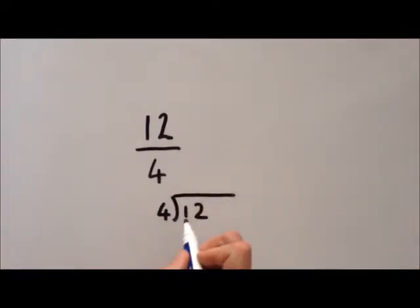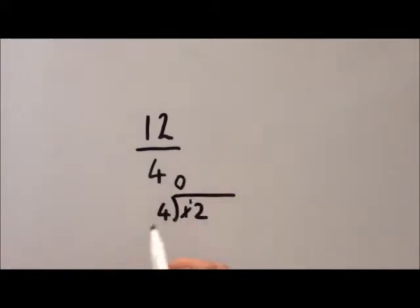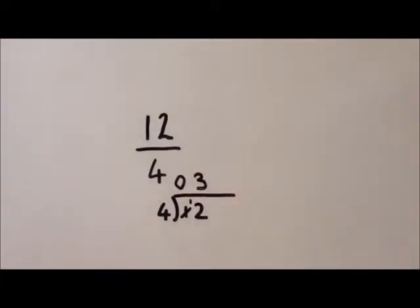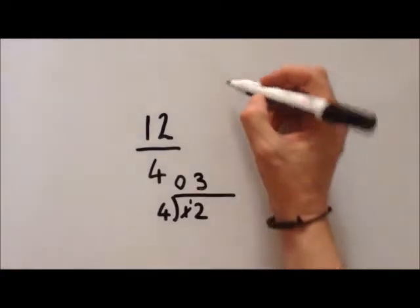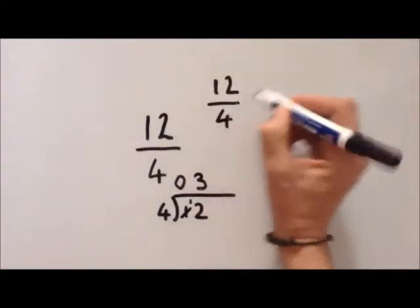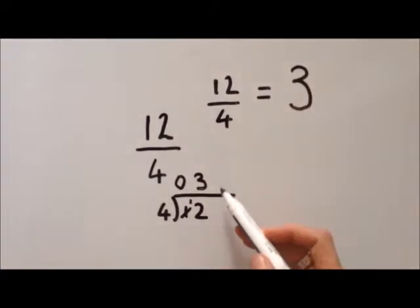How many 4s go into 1? Well we can't do that. So we put a 0 here. We cross that out and we put the 1 there. How many 4s go into 12? And that's 3. So 12 quarters equals 3 whole. Now there's no remainders so there's no quarters left. So just 3 whole.